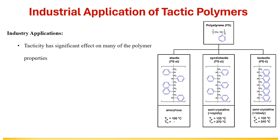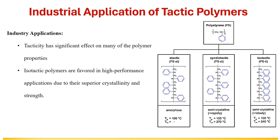Overall, tacticity plays a significant role in determining the properties of polymers. Understanding and controlling tacticity are essential for tailoring polymers with specific properties for various industrial and commercial purposes. Isotactic polymers are favored in high-performance applications due to their superior crystallinity and strength, whereas atactic polymers are used where flexibility is required.